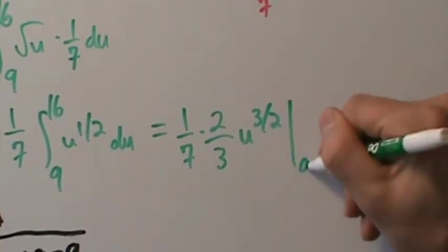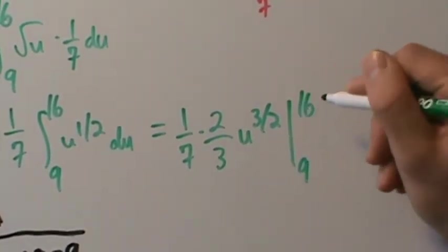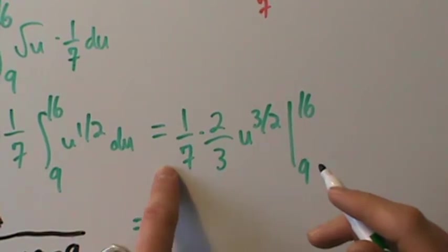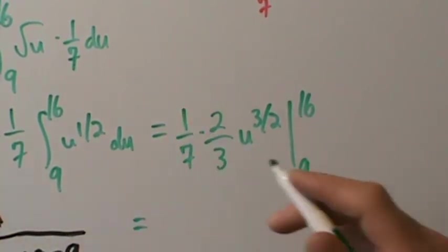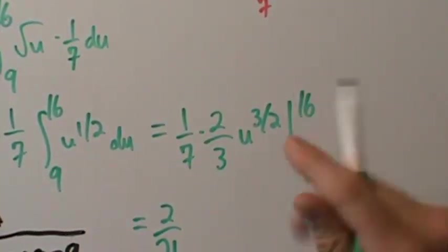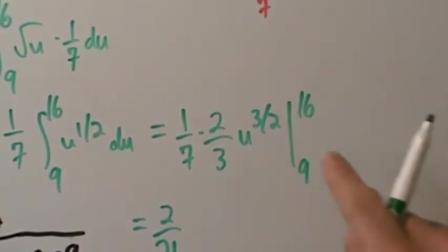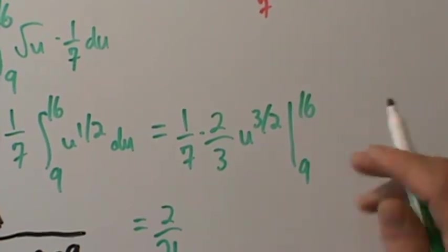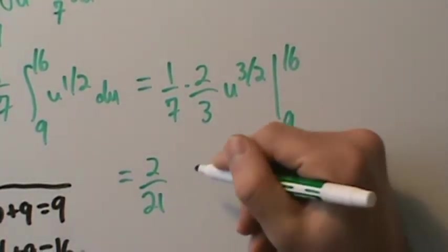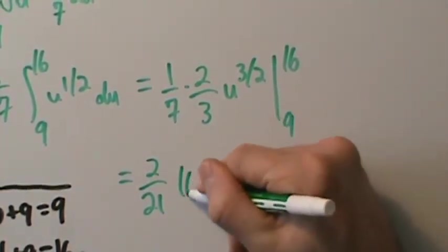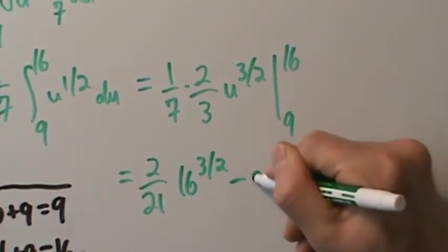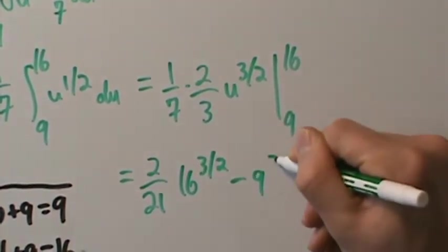So this is (1/7) × (2/3) = 2/21, times u^(3/2) evaluated from 9 to 16. We evaluate at the top and then subtract the evaluation at the bottom.